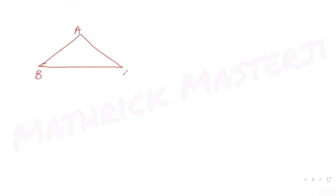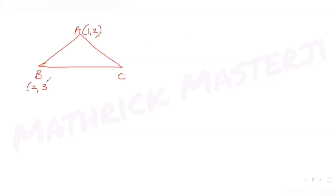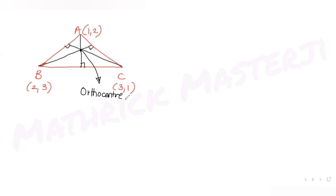Let's try to solve this question. If I have a triangle with three vertices A = (1,2), B = (2,3), and C = (3,1), I'll draw the altitudes through them and get the intersection point, which is nothing but the orthocenter. The orthocenter O has coordinates alpha comma beta.